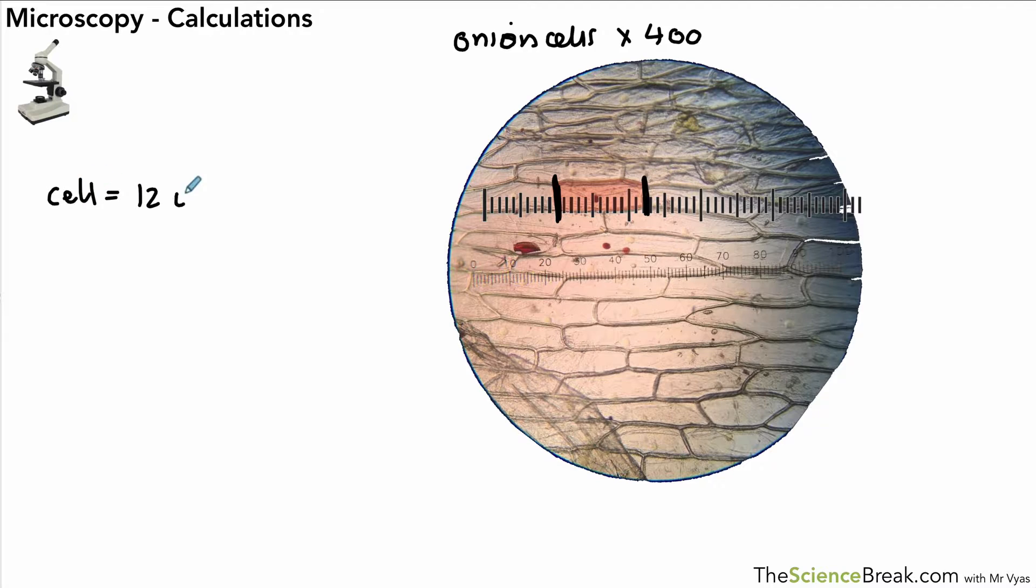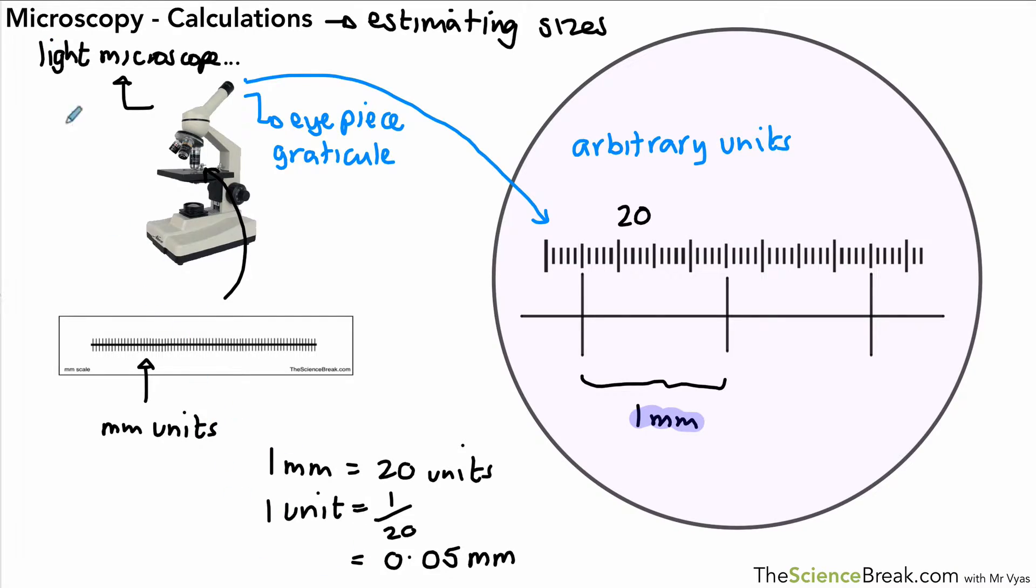We can count that we have 5, 10, 12 of our graticule units or 12 of our arbitrary units. We know that one unit is 0.05 millimeters, we worked that on our last slide.